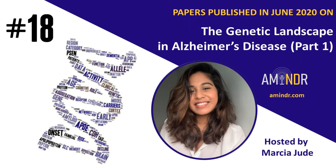Next, we have two papers examining amyloid beta-related mutations. The title of the first paper is Cerebral amyloid angiopathy linked beta amyloid mutations promote cerebral fibrin deposits via increased binding affinity for fibrinogen. It was published in the journal Proceedings of the National Academy of Sciences. The first and last authors of the paper are Kaja Marka and Aan. In this study, the authors looked at the role of beta amyloid-fibrinogen interactions in hereditary cerebral amyloid angiopathy (HCAA) pathology.